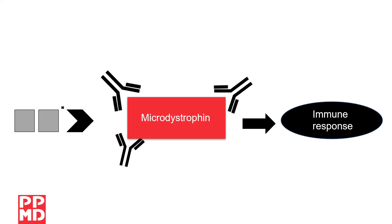Essentially, people who have deletions in exon 8 and/or exon 9 may not have ever made that part of the dystrophin protein. When their body sees the microdystrophin after the gene therapy, it may consider it foreign and attack it. Because the risks could outweigh the benefits for people with deletions in this region, any deletion in exon 8 and/or exon 9 in the DMD gene is considered a contraindication.